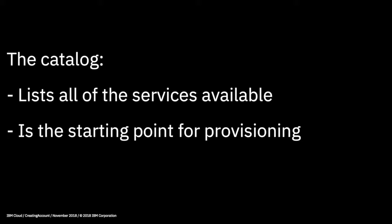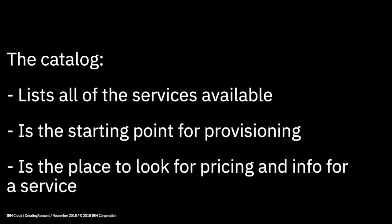So that's the end of this lab. As a quick reminder: the catalogue lists all the services available in IBM Cloud, and we explored how to search the catalogue and find the services we were after. It's a starting point for provisioning — I showed you the steps needed to provision a service. And it's also a place to look for pricing, documentation, and further information on services. Thanks very much for watching and we'll see you next time.